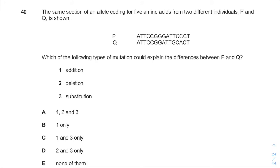The same section of an allele coding for 5 amino acids from 2 different individuals, P and Q, is shown. So we have 2 different alleles from 2 different individuals. Don't be confused when they are on top of each other like double-stranded DNA or something. It's 2 different alleles from 2 different individuals.